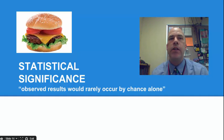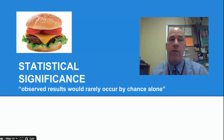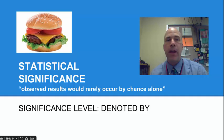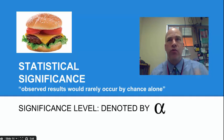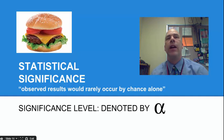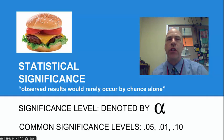That leads us to the idea of statistical significance. We defined statistical significance as the observed results would rarely occur by chance alone. Now we can actually measure that using p-values. Statistical significance leads us to the significance level, and we use the symbol alpha for that. A significance level is where we draw the line between what we believe would rarely occur by chance alone versus there being an effect present. Common significance levels are 5%, 1%, and 10%.